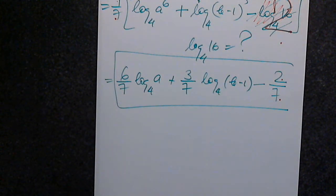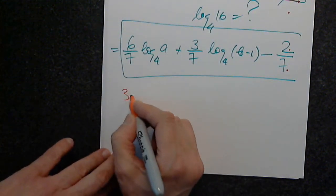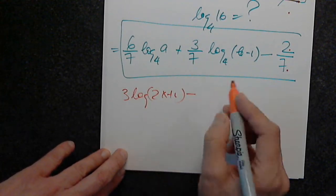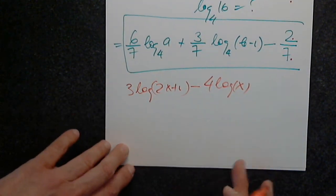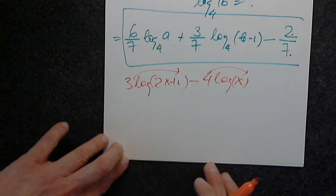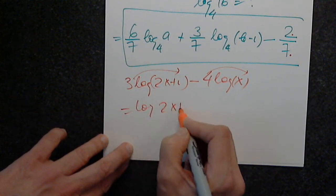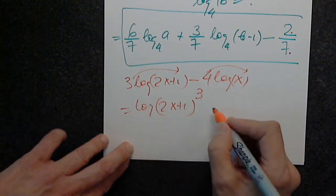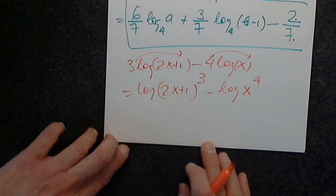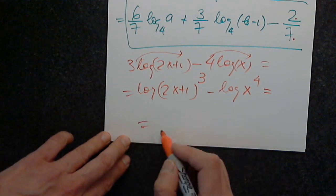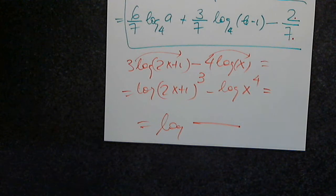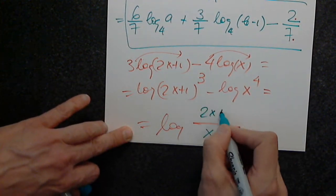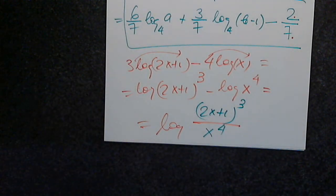Number 9: we have 3 log of 2x plus 1 minus 4 log x. We have to address the power first — the power goes back where it came from. That gives log of 2x plus 1 to the 3rd, minus log x to the 4th. Going backwards, I know I have to have log of a ratio. The term with minus in front goes to the denominator, so x to the 4th goes to the denominator and 2x plus 1 to the 3rd is in the numerator.